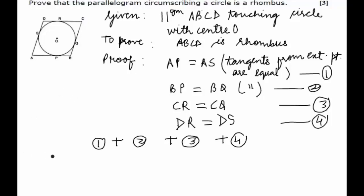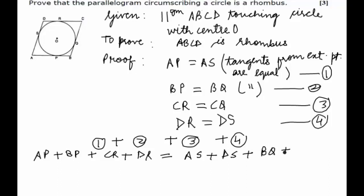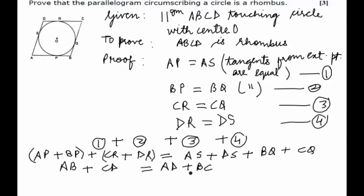we get AP plus BP plus CR plus DR equals AS plus BQ plus CQ plus DS. From the figure we can see that AP plus BP is AB, CR plus DR is CD, AS plus DS is AD, and BQ plus CQ is BC. So AB plus CD equals AD plus BC. But we know that in a parallelogram the opposite sides are equal — AB equals CD and AD equals BC. Therefore we write it as twice AB equals twice BC.